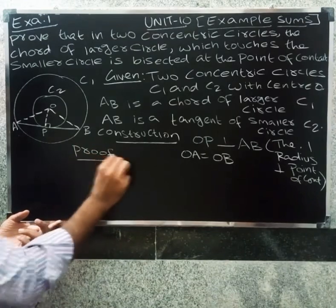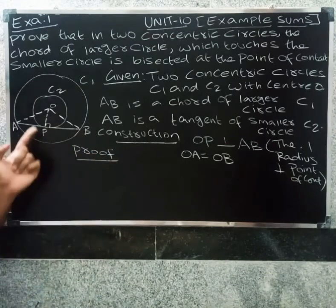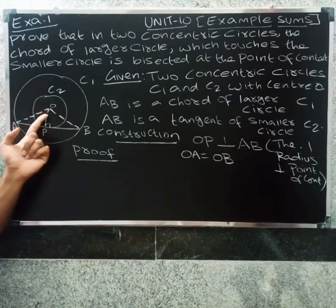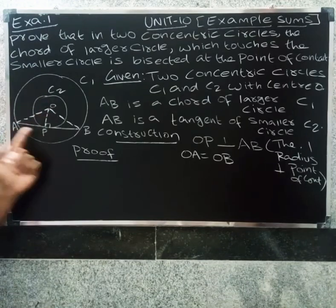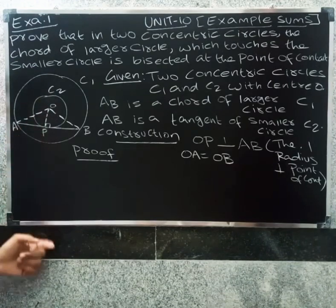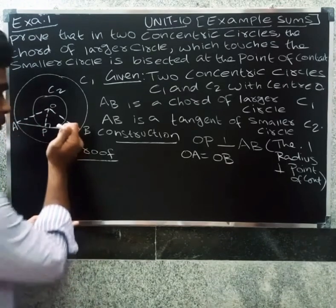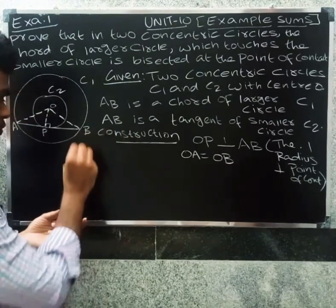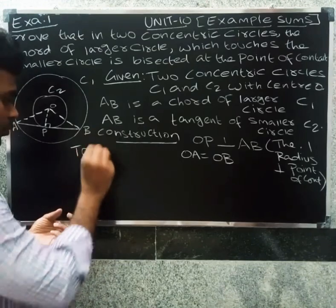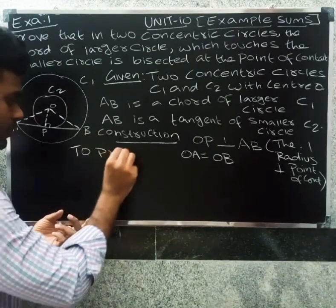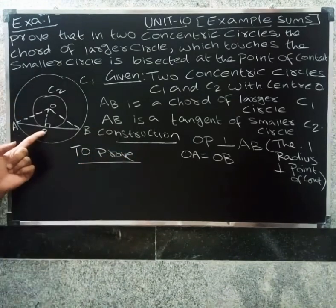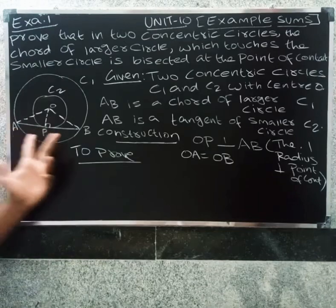Now for the proof. We need to prove that AP equals BP — that is, the chord is bisected at the point of contact P. So we consider triangle OPA and triangle OPB.